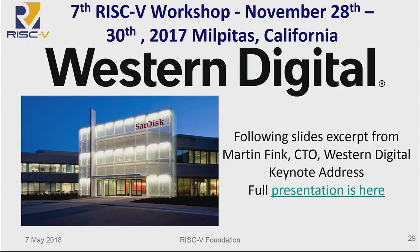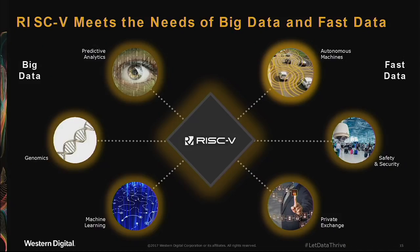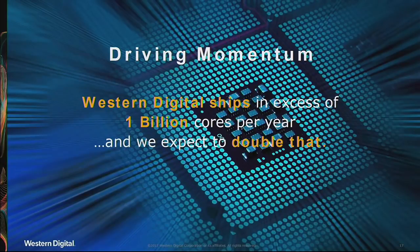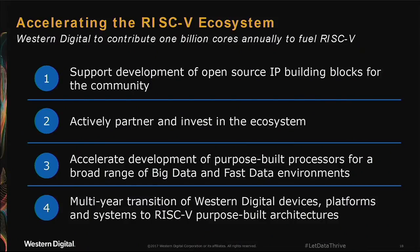They'll announce when this thing has actually hit the market. Western Digital, a very similar story — Martin Fink is actually here this week and he'll be giving an update on this. He announced this data point last November. He talked about the notion of big data and fast data — fast data being things like autonomous cars making split-second decisions, big data being things like genomics. Western Digital devices have to cover the waterfront in terms of storage architectures. They see RISC-V as an opportunity to develop a single ISA and build cores around that. They ship around a billion cores a year in all of their storage devices and will be doubling and tripling that over the next few years, and all of that will be converted to RISC-V.